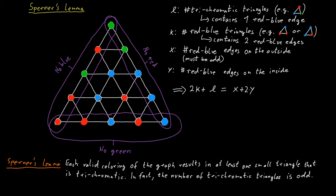So 2 times k plus l is not equal to the number of red-blue edges, but it is equal to x plus 2y. So all the red-blue edges on the outside face plus 2 times the red-blue edges on the inside.